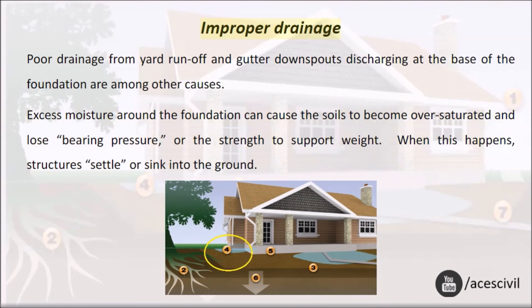Improper drainage. Poor drainage from yard runoff and gutter downspouts discharging at the base of the foundation are among other causes. Excess moisture around the foundation can cause the soils to become oversaturated and lose bearing pressure, or the strength to support weight. When this happens, structures settle or sink into the ground.